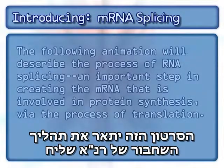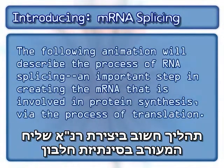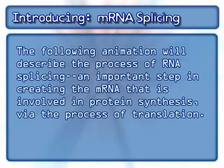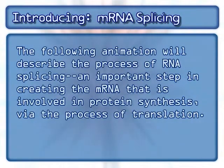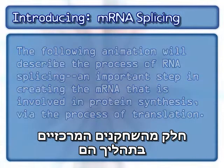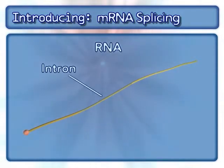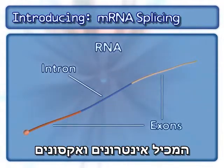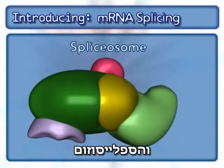The following animation will describe the process of RNA splicing, an important step in creating the mRNA that is involved in protein synthesis via the process of translation. Key factors in this process include RNA possessing introns and exons, and the spliceosome.